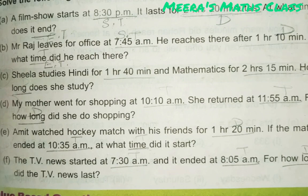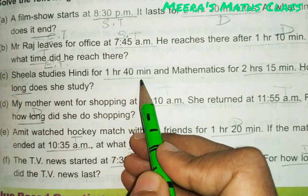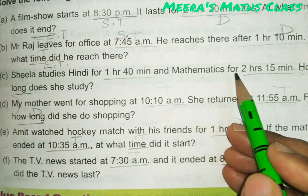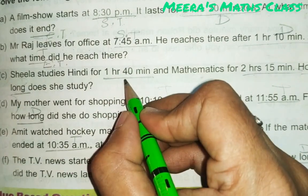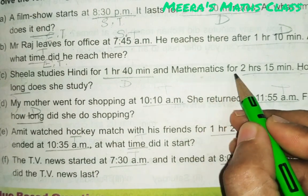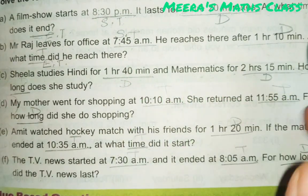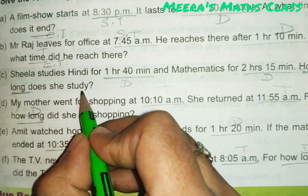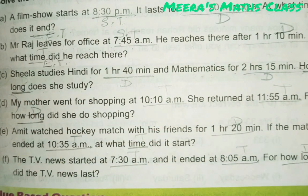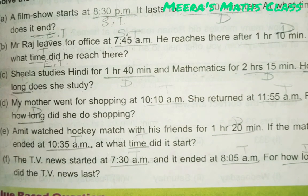Now part C. Sheila studies Hindi for 1 hour 40 minutes and mathematics for 2 hours 15 minutes. I underlined 1 hour 40 minutes — what is this? This is duration. Mathematics for 2 hours 15 minutes — that is also duration. So here two durations are given. How long does she study? How long means duration is asked. If you add the two durations you will get the total duration.